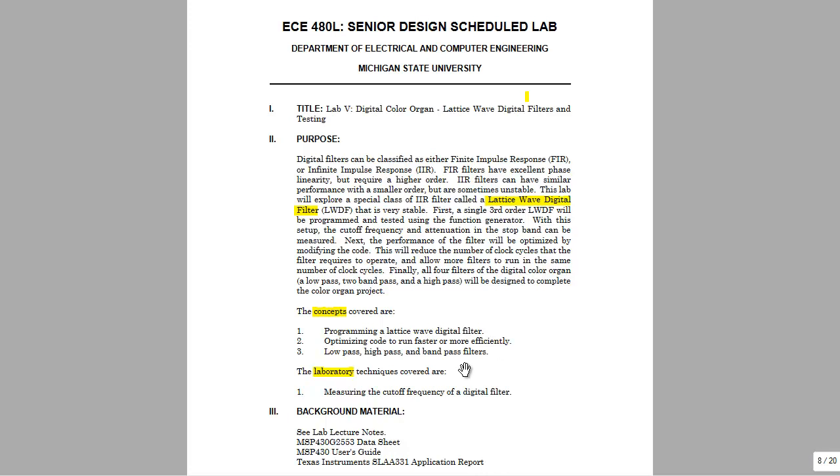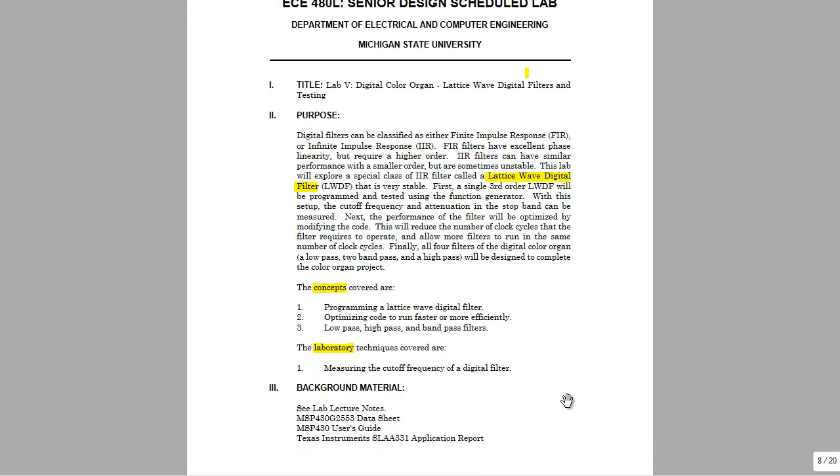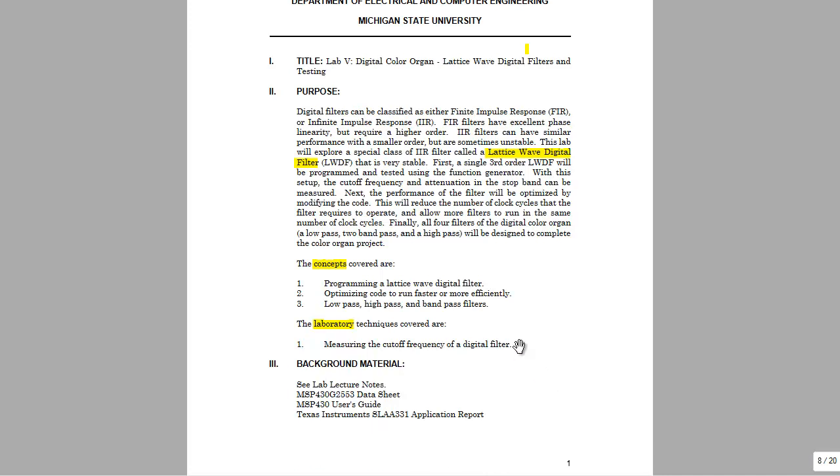Finally, you're going to dive into the design of a four channel color organ and make the low pass, high pass, and band pass filters to a set analog filter specification. In part A you're going to measure the cutoff frequency of a digital filter using the signal generator as a source, and sweep through the frequency and watch how the response changes.